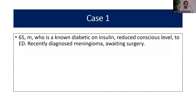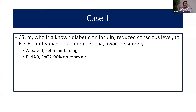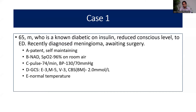He is a recently diagnosed patient with meningioma, awaiting neurosurgical intervention. On ABCDE assessment: airway is patent and self-maintaining; breathing — no problem detected; circulation — pulse rate 74, blood pressure 130/70; GCS was 13; and blood sugar was 2 mmol/L; temperature was normal. How do you manage this patient?